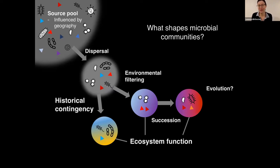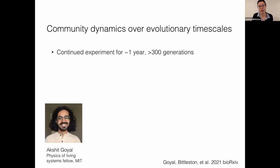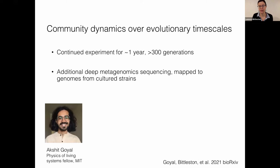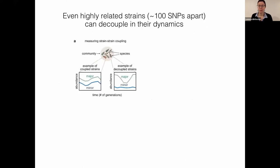Evolution was also investigated by continuing the experiment over evolutionary timescales — more than 300 generations over about a year — with additional deep metagenomic sequencing mapped back to genomes from cultured strains. This work, led by Akshet Goyal at MIT and recently posted as a preprint, found that most variation and evolution arose from pre-existing genetic variants belonging to the same species — strains indistinguishable by 16S — that played large roles in community change over time.